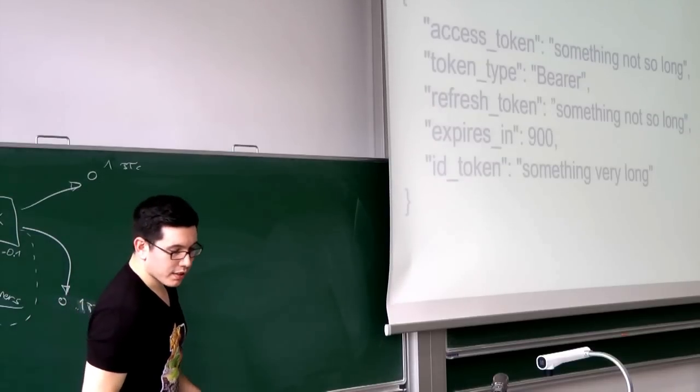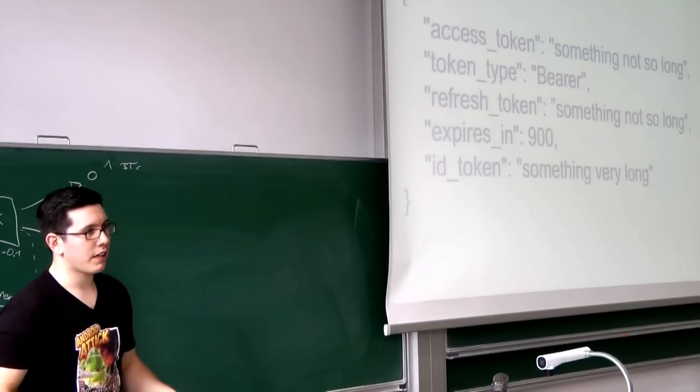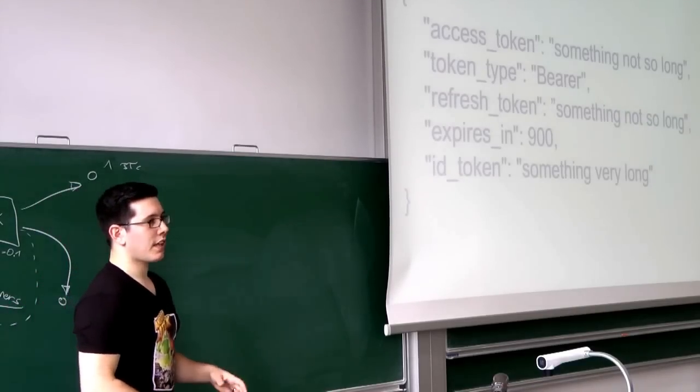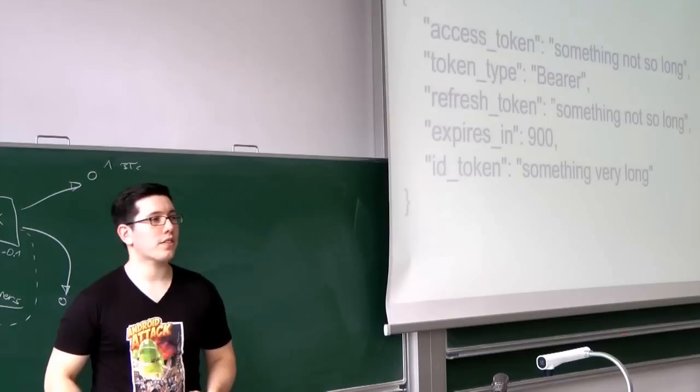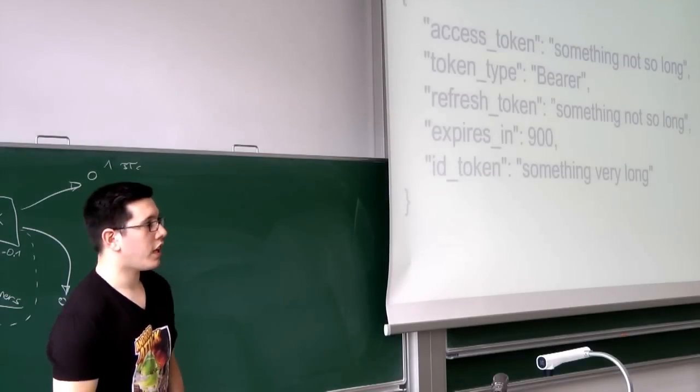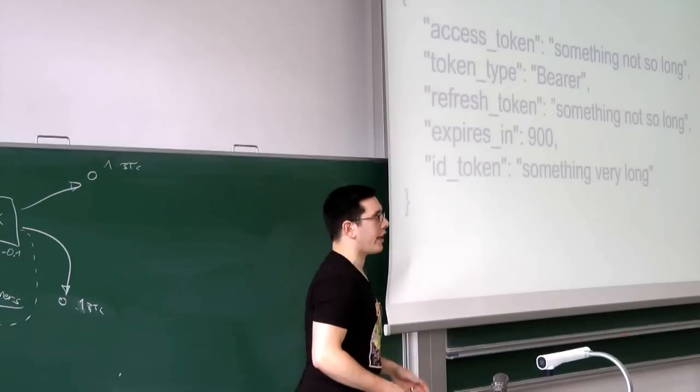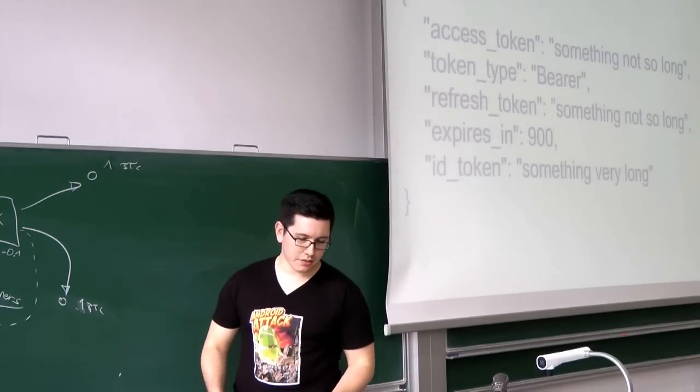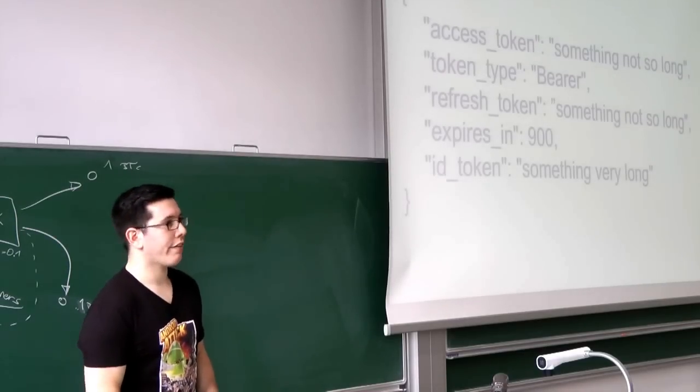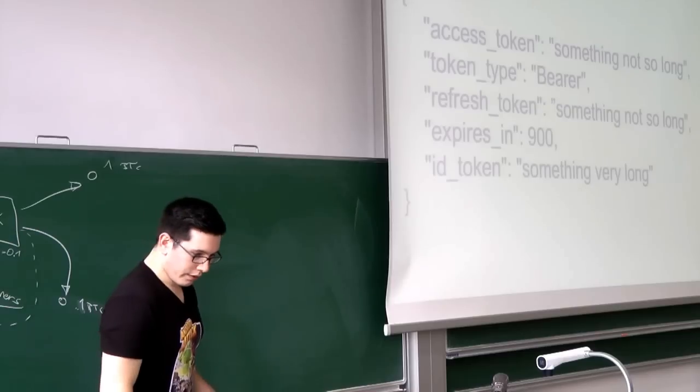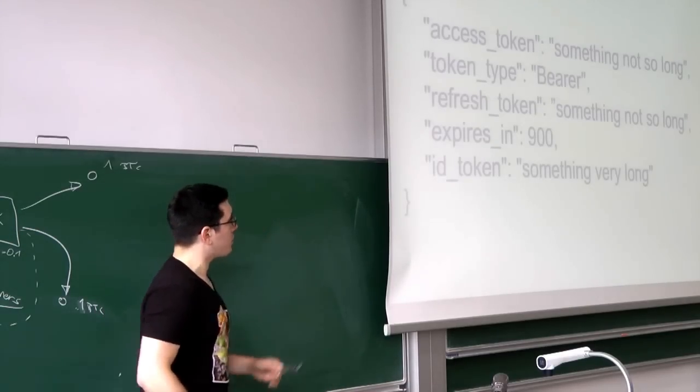So, what you get back from the server is a reply with three different tokens. They all have different timelines. So, basically, the access token is something not too long and it can be used to retrieve user resources. Then there is the token type which is always Bearer. Then there is a refresh token which can be used for OpenID to refresh your access token. So, if you know that your access token is not valid anymore, you can refresh it. The access token at PayPal is valid for 50 minutes and the refresh token is valid for 8 hours. The ID token at the bottom can be used to identify your user. So, this one could be useful for you.